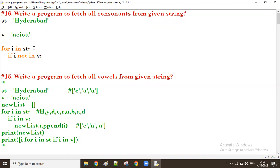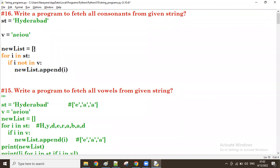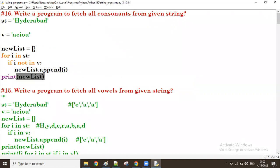If i not in vowels, if not available, then we are taking it to a new list. If not available, then append that i to the new list. After all over, at the end we're going to print the new list.